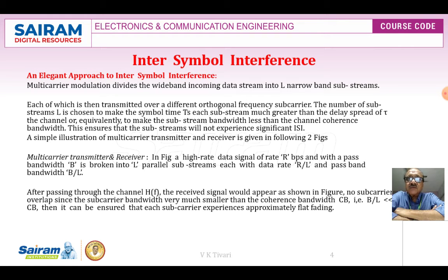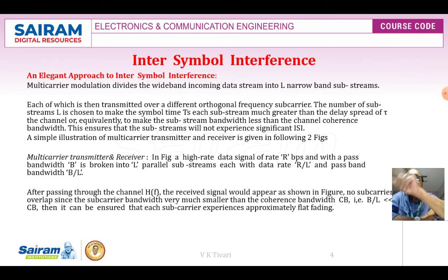After passing through the channel, the received signal shows subcarrier bandwidth very much smaller than the coherent bandwidth. We have already established that the symbol time must be far greater than the delay time. B/L is well less than the coherent bandwidth CB, which ensures that each subcarrier experiences approximately flat fading. Even though the overall channel has frequency selective fading where B is greater than CB, dividing into L subcarriers ensures each one appears nearly rectangular and flat.